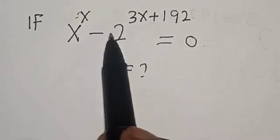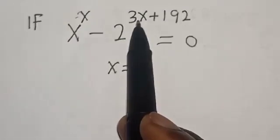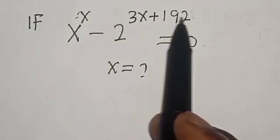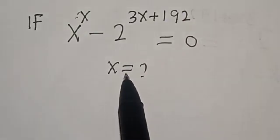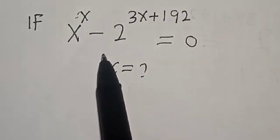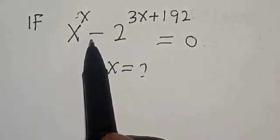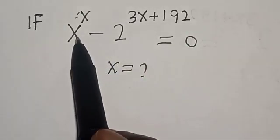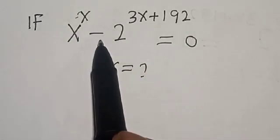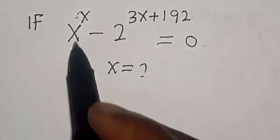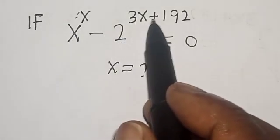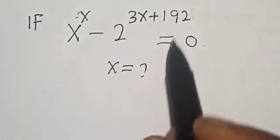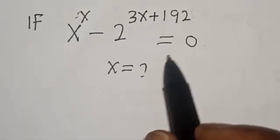If s raised to power s, minus 2 raised to power 3s, plus 192 is equal to 0, what is the value of x? Welcome to Magis. In this class, we want to find the value of s from this equation: s raised to power s, minus 2 raised to power 3s, plus 192 is equal to 0.